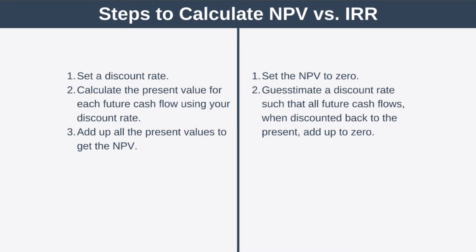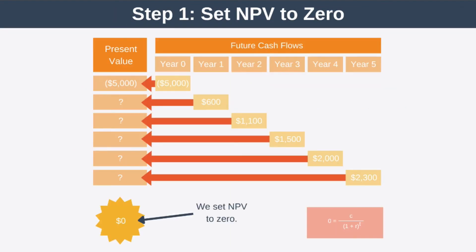We begin by setting NPV to 0. Once we've done that, step two is to guesstimate a discount rate such that all future cash flows, when discounted back to the present, add up to 0. So as you can see, we're beginning by setting net present value to 0. Now what we have to do is guesstimate a discount rate that will produce a set of values such that everything in this column adds up to 0. Essentially, we have to guess what number to use as the discount rate to make all the present values add up to 0. Now IRR is a number that can't be directly calculated, so it has to be found through trial and error.